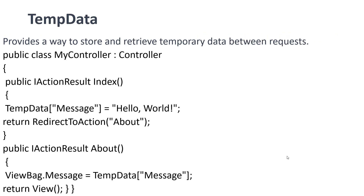The next helper method is TempData, which provides a way to store and retrieve temporary data between requests. For example, a message like 'Hello World' can be initialized in TempData in a variable called message, and that message can then be assigned to ViewBag. In a later session we will discuss the differences between ViewBag, ViewData, and TempData.